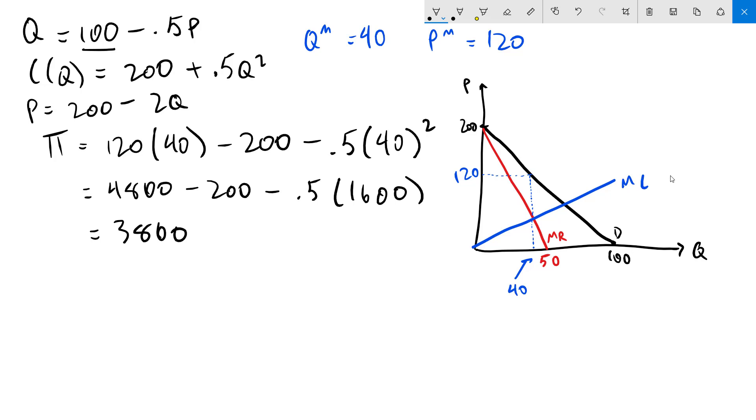The socially optimal outcome is going to happen where marginal cost crosses demand which is right here. Let's solve for that. Marginal cost remember is Q. Set that equal to our price based on our inverse demand function, 200 minus 2Q. Add 2Q to both sides we get 3Q equals 200. Divide by 3 we get Q equals 200 thirds which is 66 and 2 thirds.